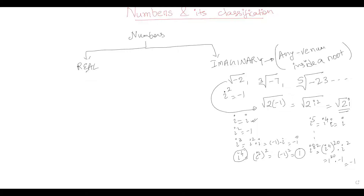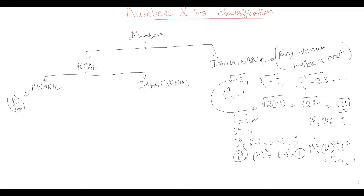Now let us focus on real numbers. Real numbers are mainly classified as rational numbers and irrational numbers. Any number which can be expressed in p by q form — where p is the numerator and q is the denominator, p and q are integers, and q cannot be zero — is termed a rational number. Any number which cannot be written in p by q form is termed an irrational number.